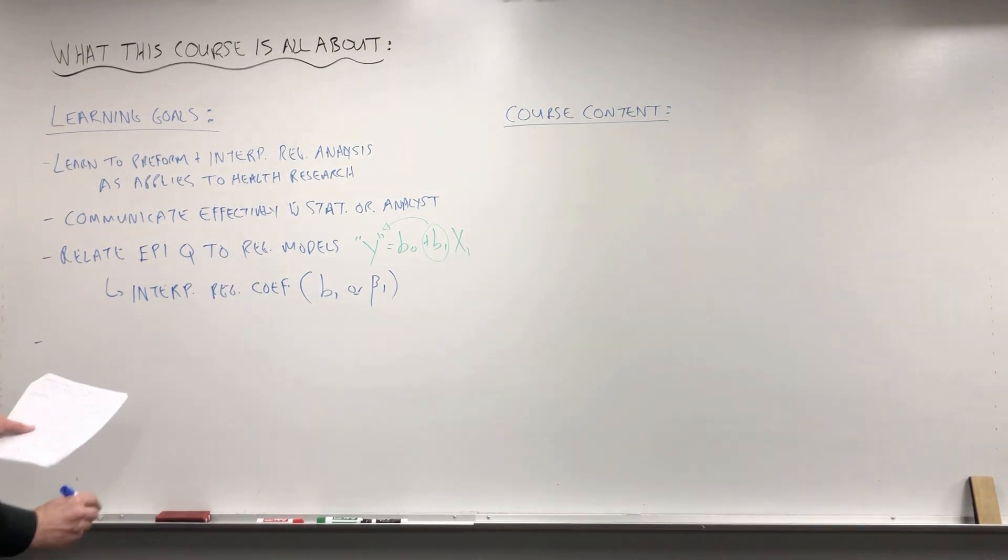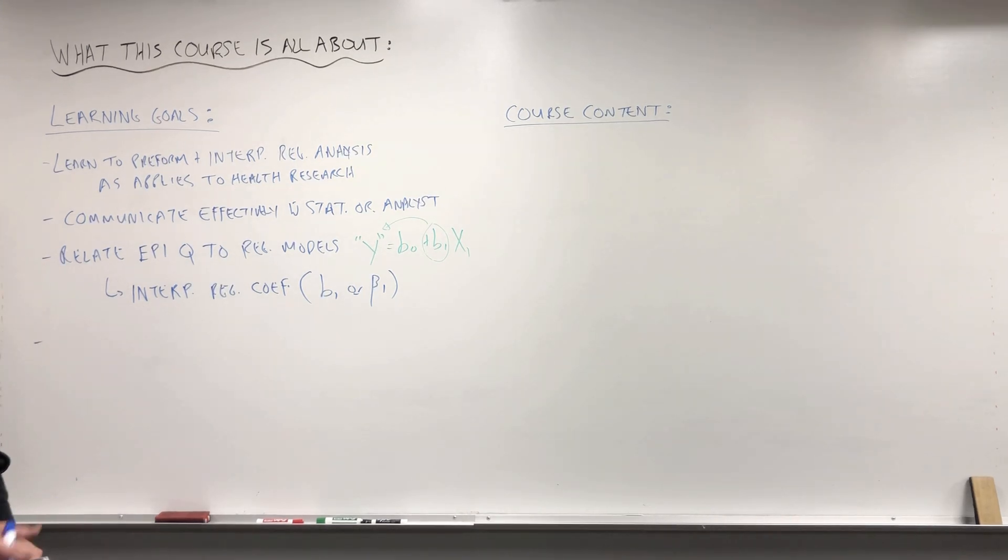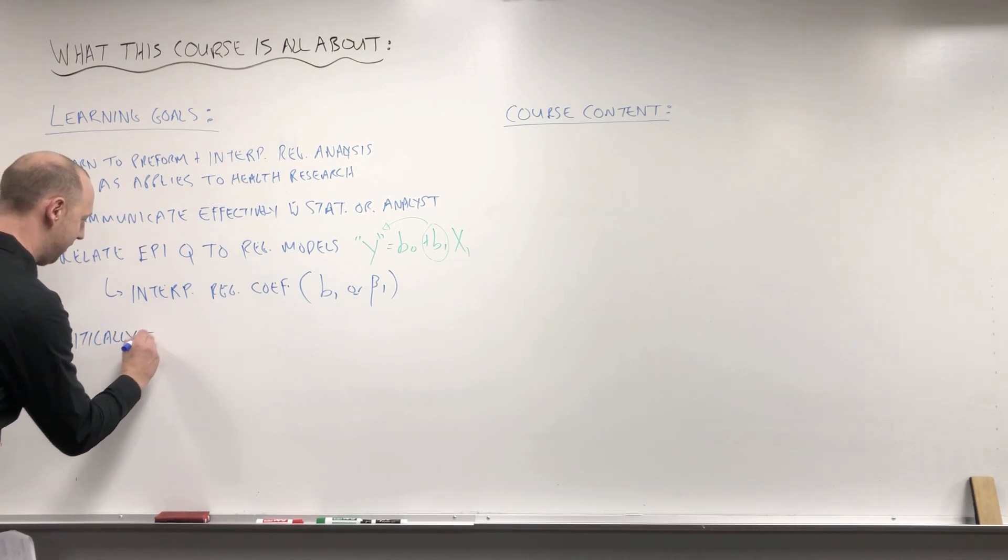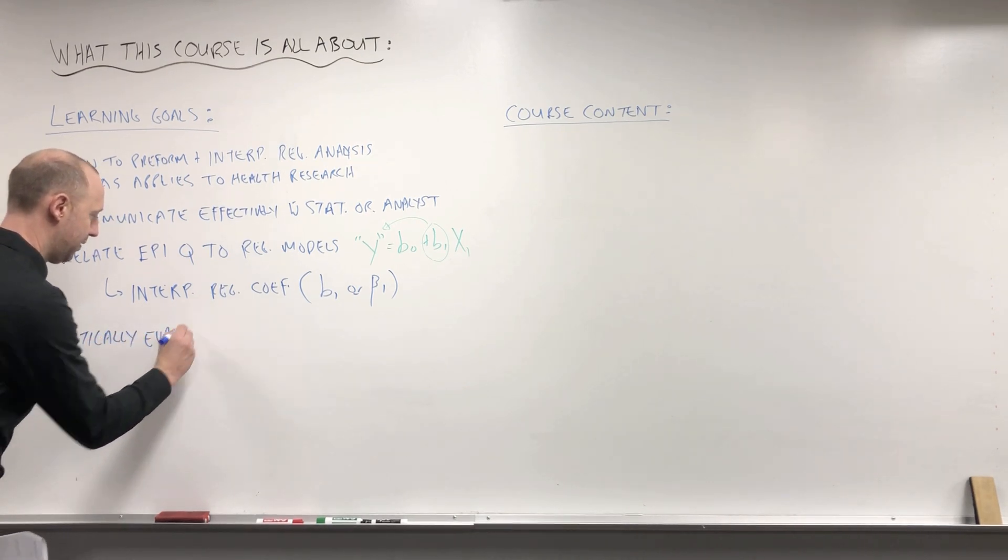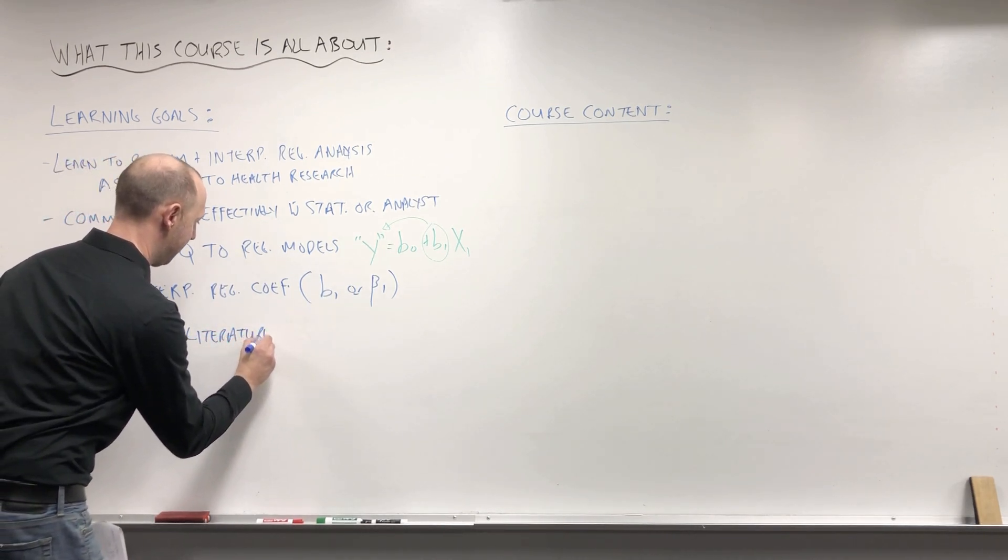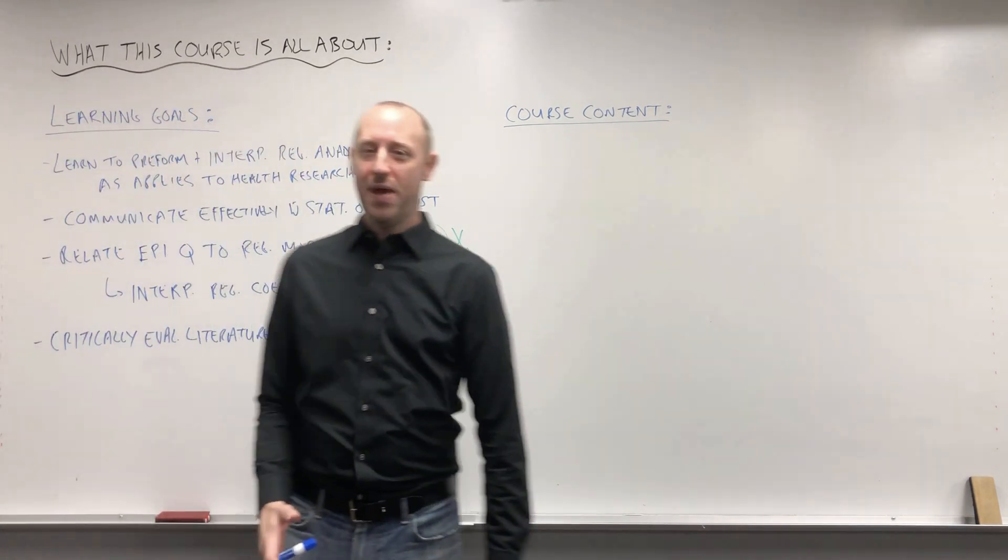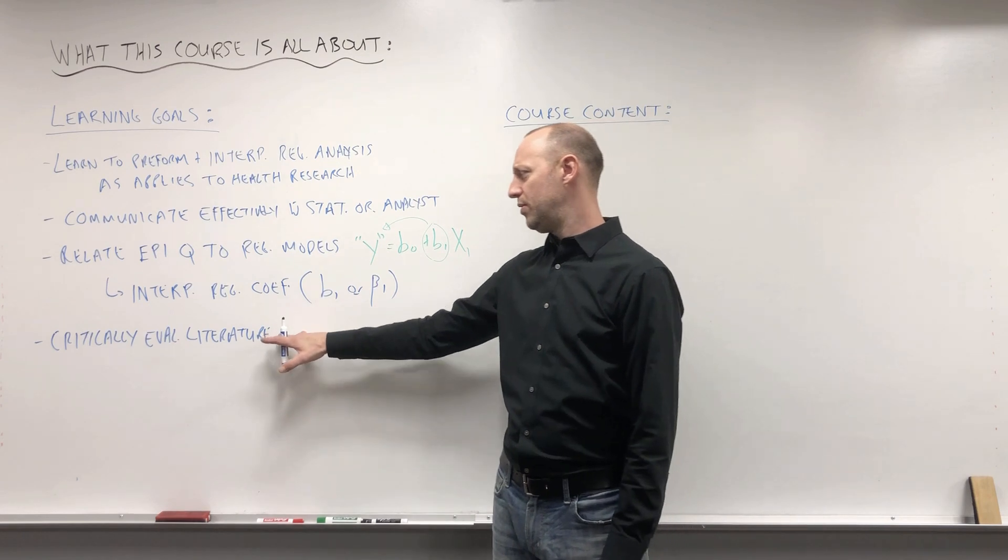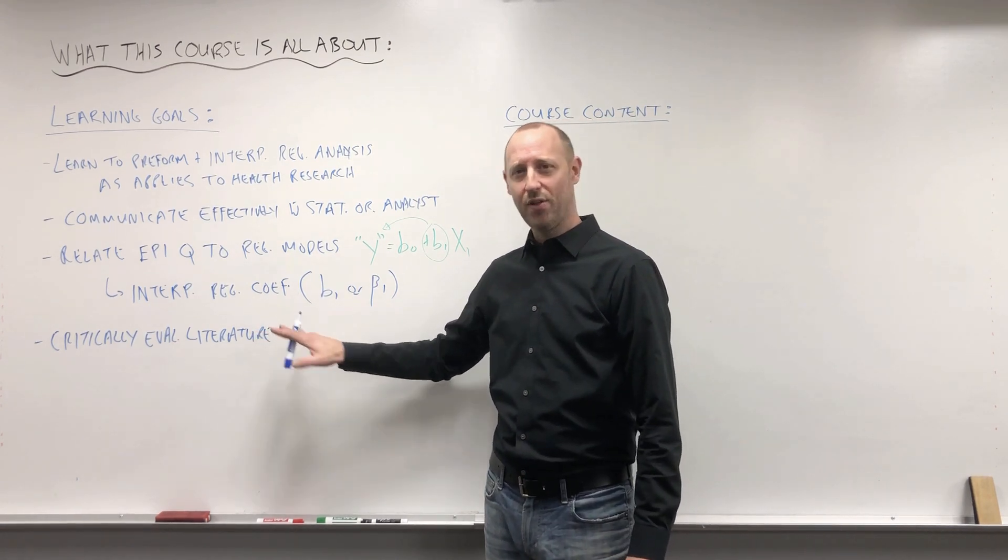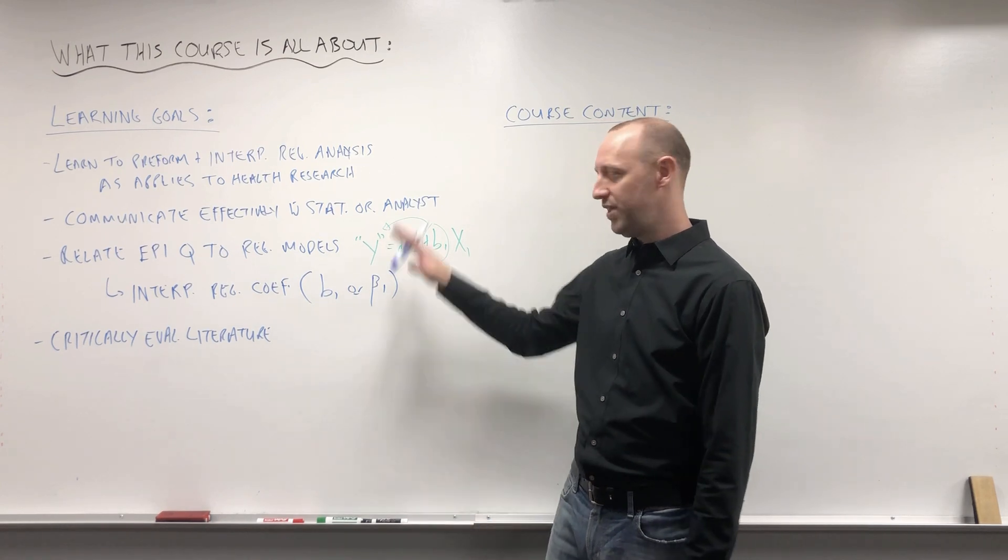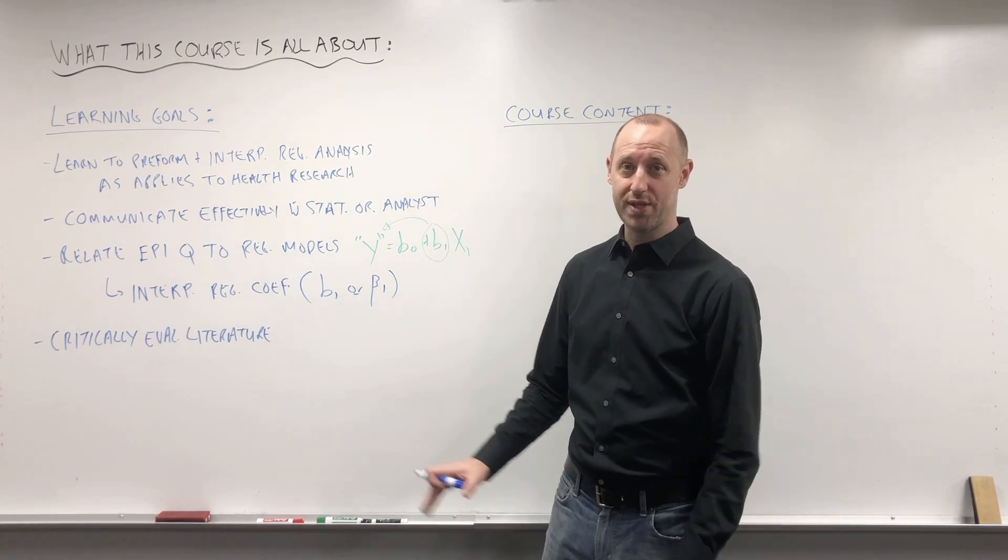One of the final learning goals is to critically evaluate literature. When you read a paper and you see some of these models that we're going to talk about being used, you should be able to think about whether they're used well or not, what were some of the limitations, and things like these - to be able to critique the use of these tools that we're going to see in the course.